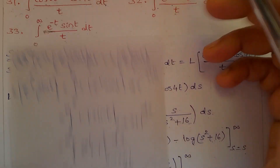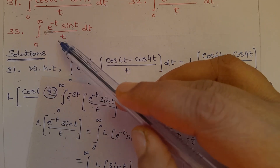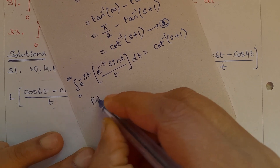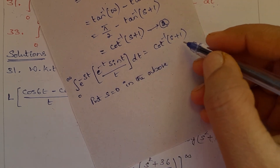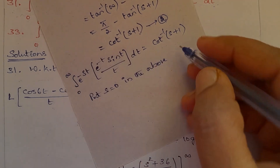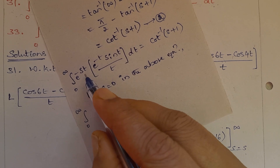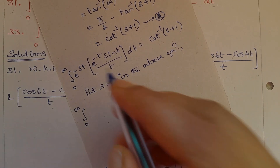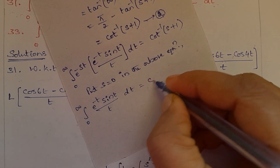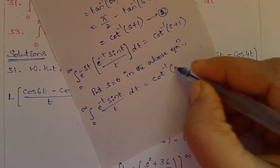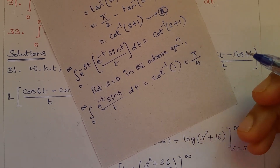In the problem, they ask for the integral from 0 to infinity of e^(-t) sin(t) divided by t, dt — here e^(-st) is not present. Therefore, put s equal to 0. With s=0, e^0 = 1, so the integral equals cot inverse of (0+1) = cot inverse of 1 = 45 degrees or pi/4 radians. This is the answer.